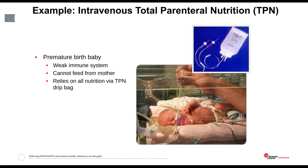Our most vulnerable are the weak and immunocompromised, and this includes premature birth babies. If they're born too early, they have a very weak immune system and can't feed from the mother, so we have to feed them using intravenous drip bags containing all the food they need in the form of total parenteral nutrition. If any contamination gets into those parenteral nutrition bags, it will cause almost certain death to these very weak and immunocompromised patients.